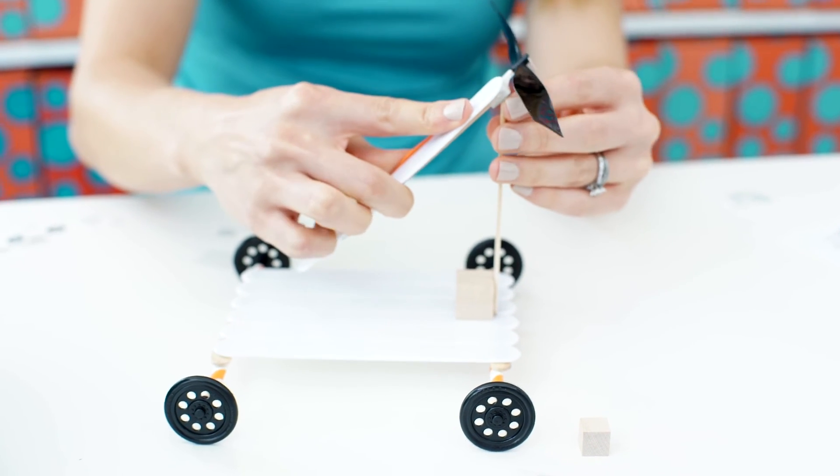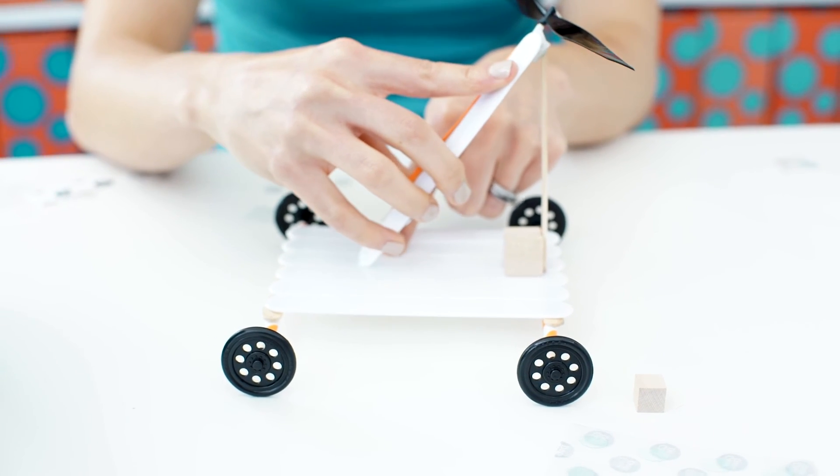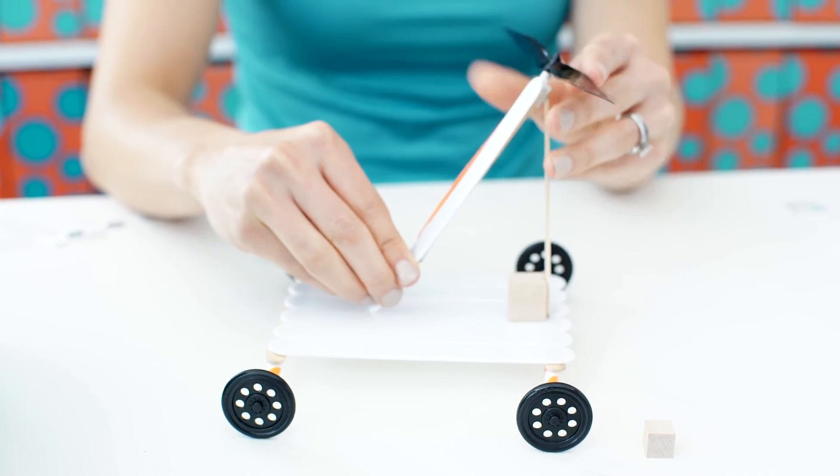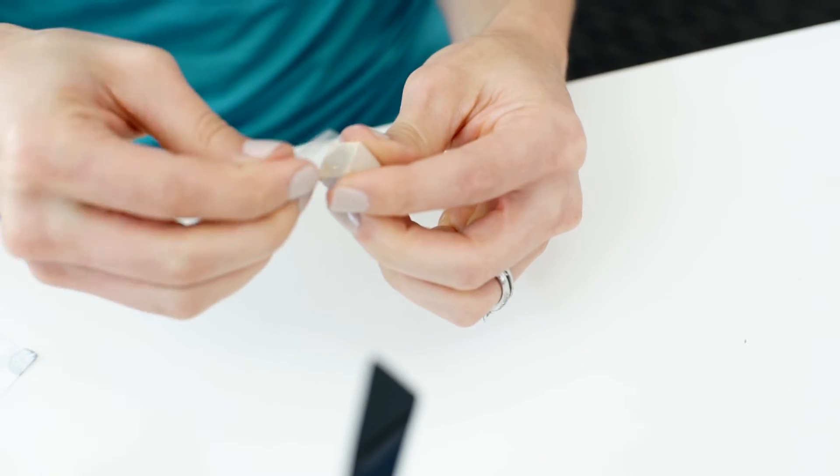Connect the top like this. Then place the bottom onto the car base like this. Take the small wood block and attach it to your car base. Make sure it touches your engine.